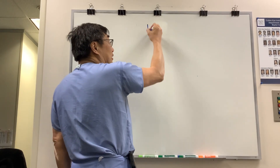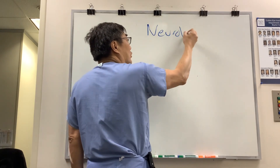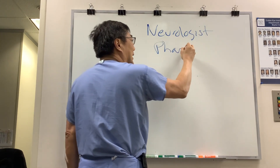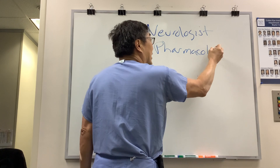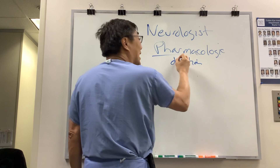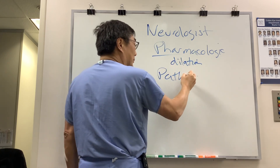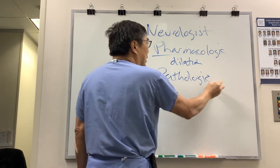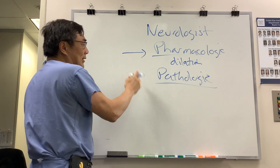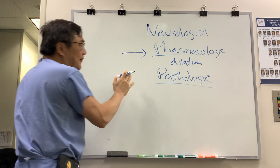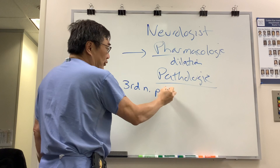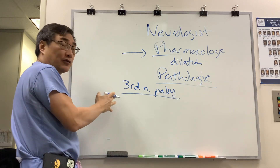We got a message from a neurologist asking how to differentiate pharmacologic dilation from pathologic dilation of the pupil. When answering this question, the very first thing you have to do is make sure there's no evidence for third nerve palsy, because that is the dangerous one and a neurogenic cause for a dilated pupil.